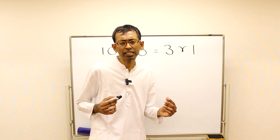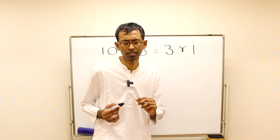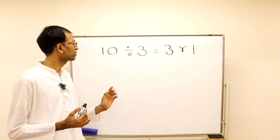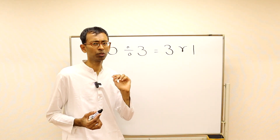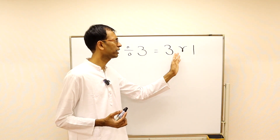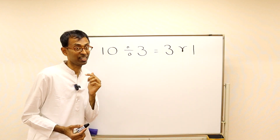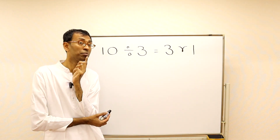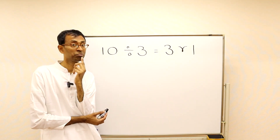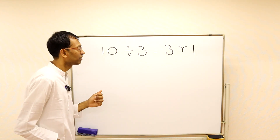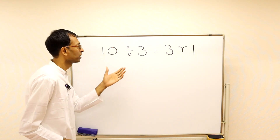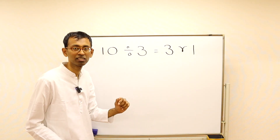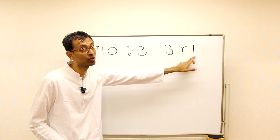We will see more difficult problems, but first a funny thing. Take 10 divided by 3 — you know the answer is 3 remainder 1. But are there any other possible answers for this problem? Think about it. Division is repeated subtraction. We took away 3 threes from 10, leaving remainder 1.